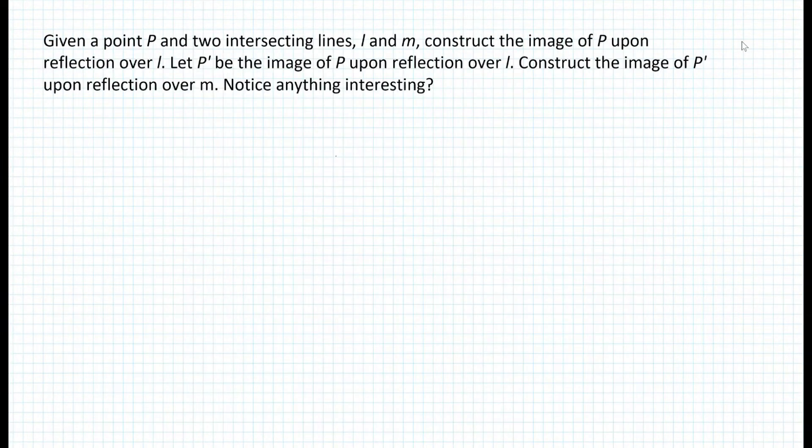Let's look at another example involving reflections. Given a point P and two intersecting lines L and M, construct the image of P upon reflection over line L. Let P prime be the image of P upon reflection over L. And then construct the image of P prime upon reflection over M. Notice anything interesting?